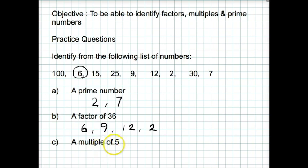Last one, a multiple of 5. A multiple is a number in the times table of that number. So if we do our 5 times table, we'll find the multiples of 5. 15 is a multiple of 5. 25 is a multiple of 5. 30 is a multiple of 5, and so is 100.